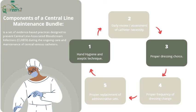Central line bundles are composed of two aspects: insertion and maintenance. The central line maintenance bundle has five components — a set of evidence-based practices designed to prevent CLABSI during the ongoing care and maintenance of the central venous catheter. The five components are: (1) hand hygiene and aseptic technique, (2) daily review and assessment of catheter necessity, (3) proper dressing choice, (4) proper frequency of dressing change, and (5) proper replacement of administration sets.